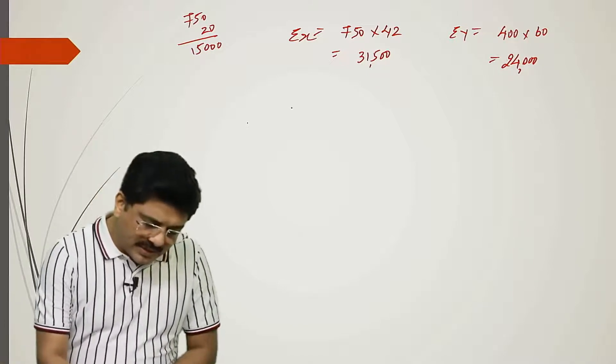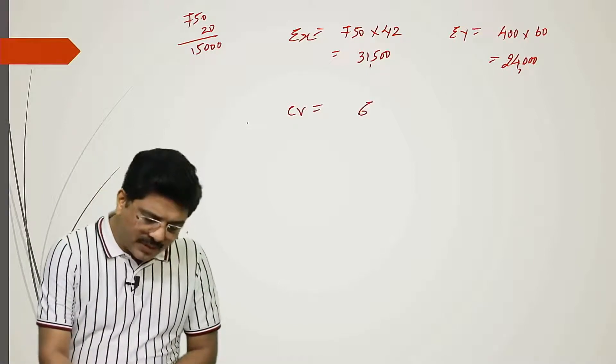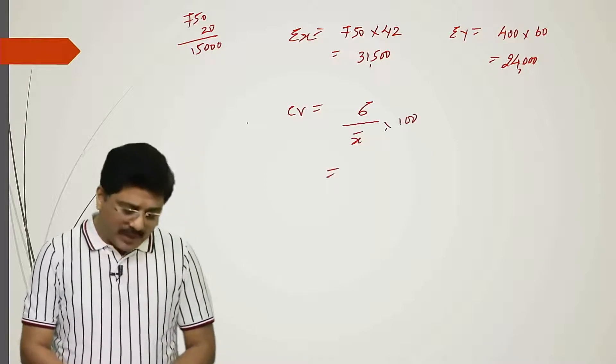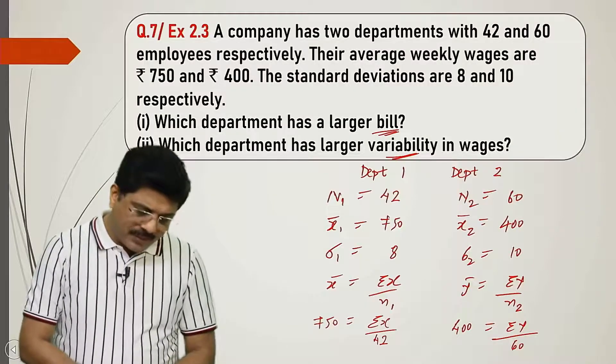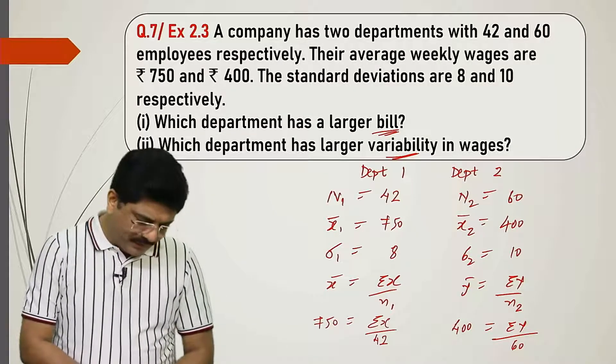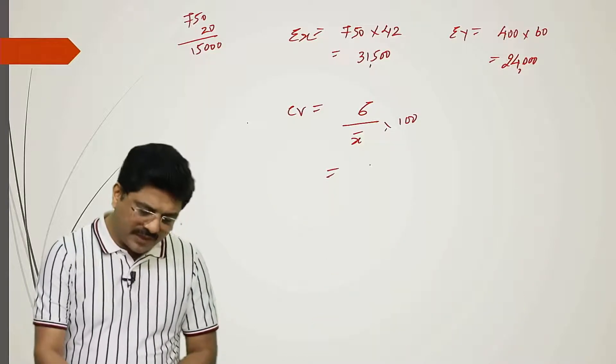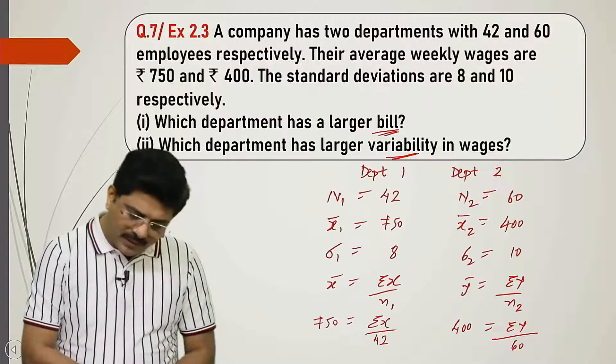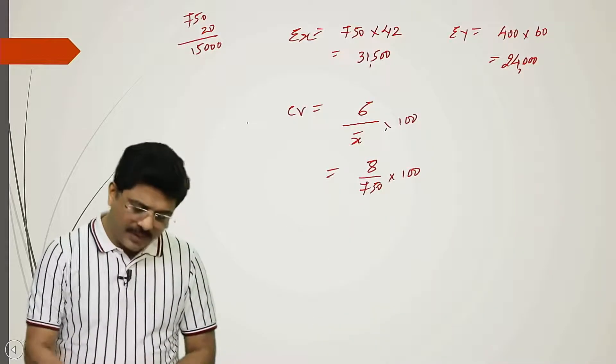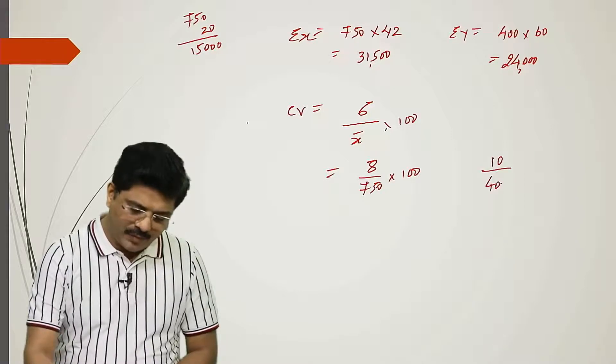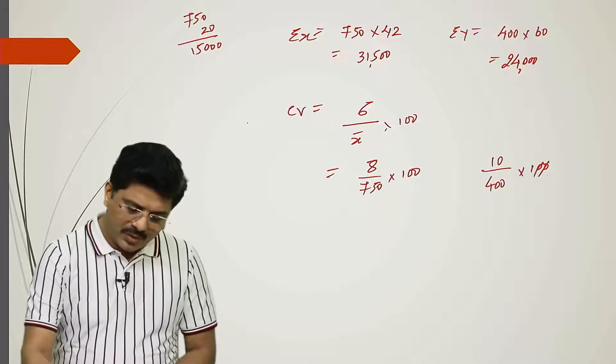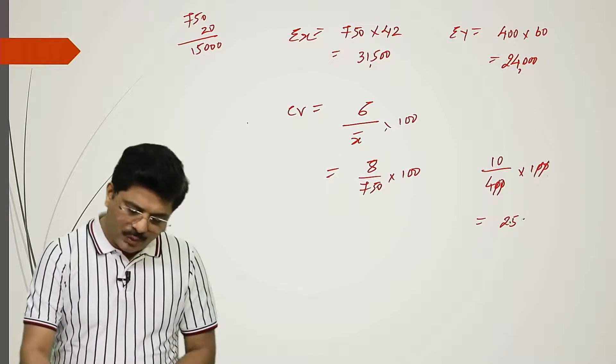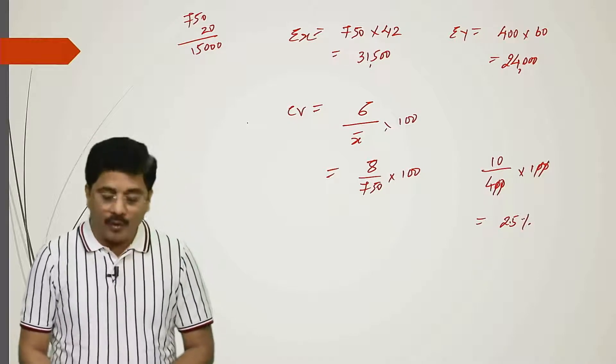After that we need to find CV. CV formula: standard deviation upon x bar into 100. Department 1's standard deviation is 8, and x bar is 750. So 8 upon 750 into 100. For the second, 10 upon 400 into 100.